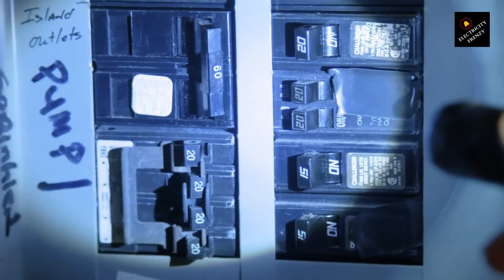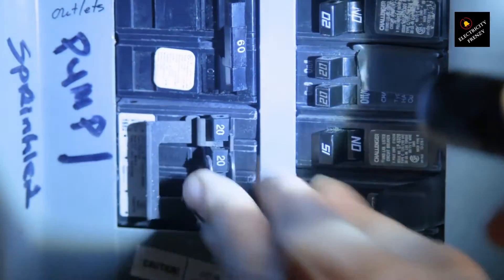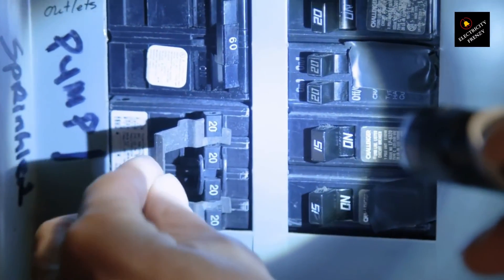To help prevent power issues, consider installing surge protectors. Also, make sure the area around your dishwasher is dry to avoid ground faults.